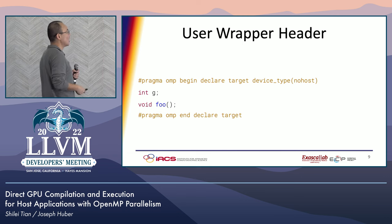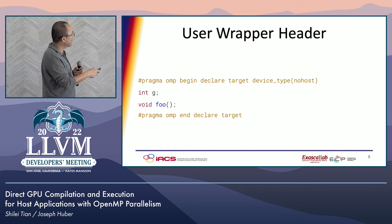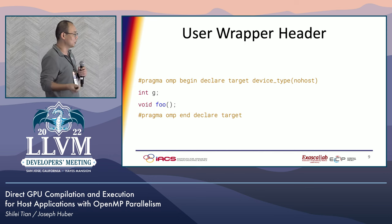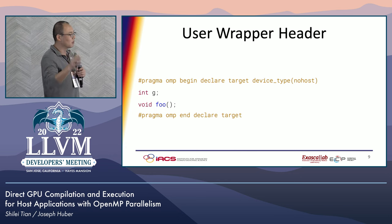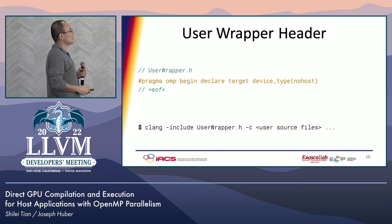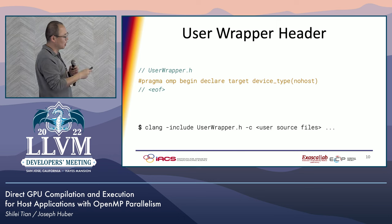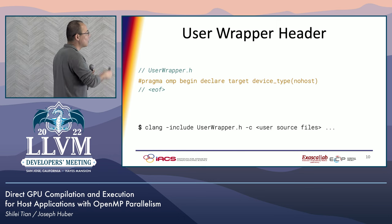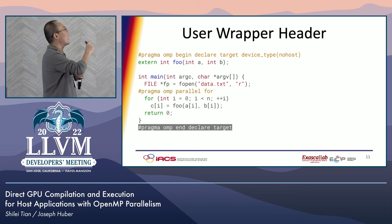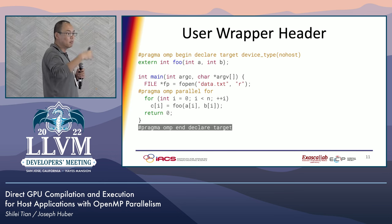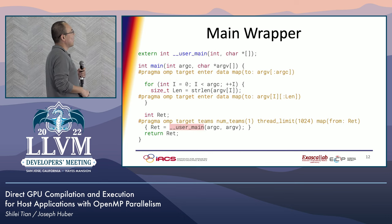Let's start with the user wrapper header. OpenMP provides the declare target construct, so code between the pair of pragmas will be treated as device code by the OpenMP compiler. It is equivalent to adding __device__ to each global variable or function manually. If we put that construct in the header file and force the compiler to include the wrapper header when compiling user source files, it is equivalent to having the declare target construct at the beginning of each user source file. In this way, the OpenMP compiler will take all of the user code as device code, including the user main function.